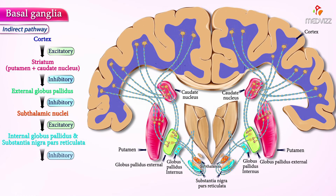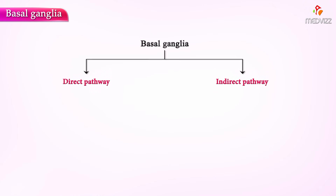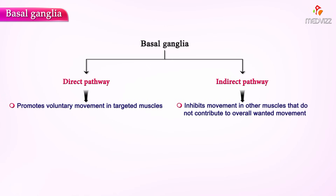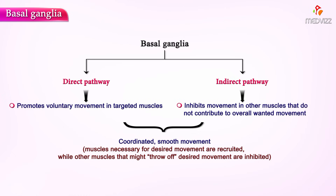Finally, this loop inhibits the thalamic nuclei. The end result of the indirect pathway is decreased activity of the cortical motor neurons and a consequential suppression of extemporaneous movement. It is thought that the direct pathway promotes voluntary movement in targeted muscles, whereas the indirect pathway simultaneously inhibits movement in other muscles that do not contribute to the desired movement. The result is coordinated, smooth movement in which the muscles necessary for the desired movement are recruited, while other muscles that might throw off the desired movement are inhibited.